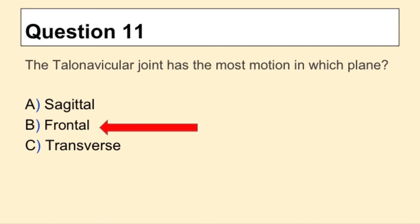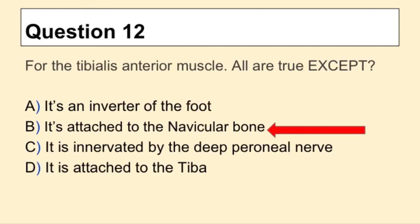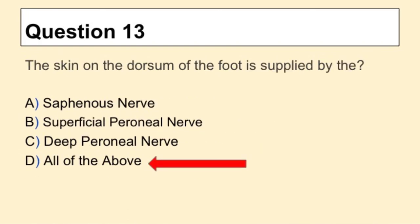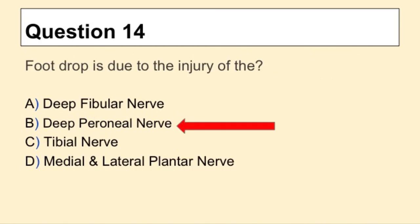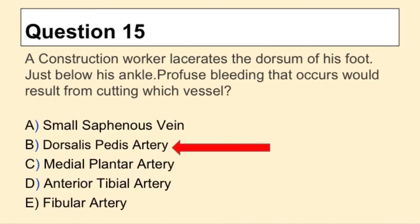Question 11: The talonavicular joint has the most motion in which plane? The answer is B, frontal plane. Question 12: For the tibialis anterior muscle, all are true except B — it is attached to the navicular bone. Question 13: The skin on the dorsum of the foot is supplied by D — all of the above. Question 14: Foot drop is due to the injury of B — the deep peroneal nerve. Question 15: The answer is B, dorsalis pedis artery.